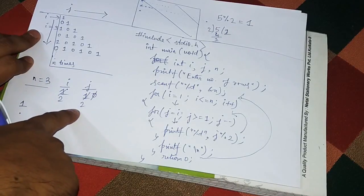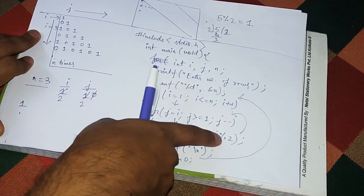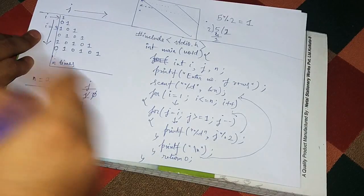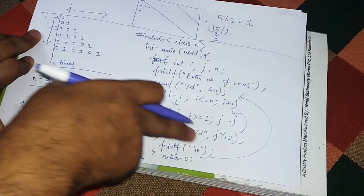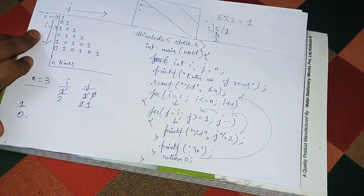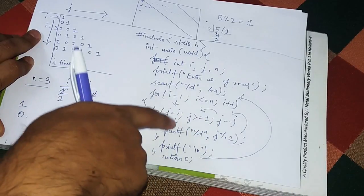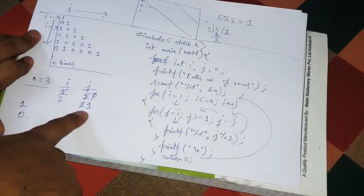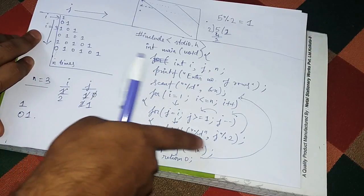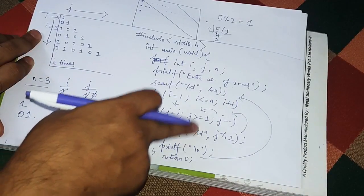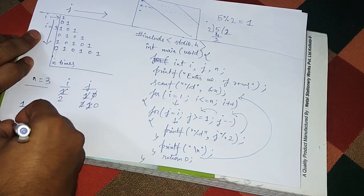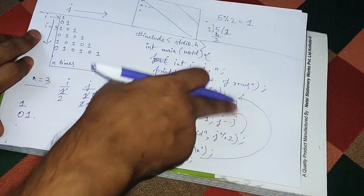Now j is initialized to i which is 2. Is 2 greater than or equal to 1? True. We print j mod 2: 2 mod 2 gives remainder 0, so we print 0. The j loop closes, j decrements to 1. Is 1 greater than or equal to 1? True. We print j mod 2: 1 mod 2 gives remainder 1, so we print 1. j decrements to 0. Is 0 greater than or equal to 1? False — we exit the j loop, hit printf backslash n, and move the cursor to the next line. The i loop increments i to 3.